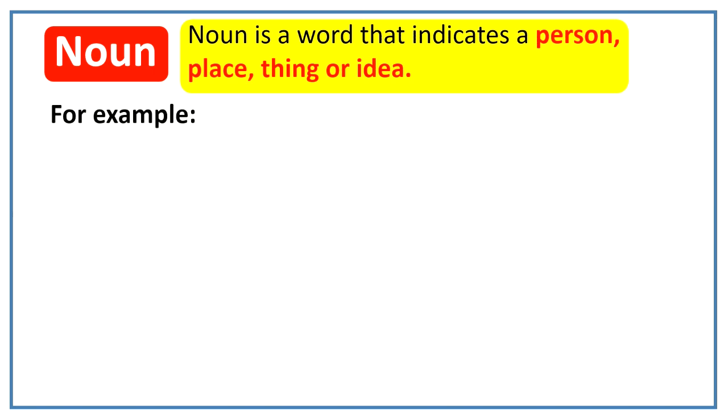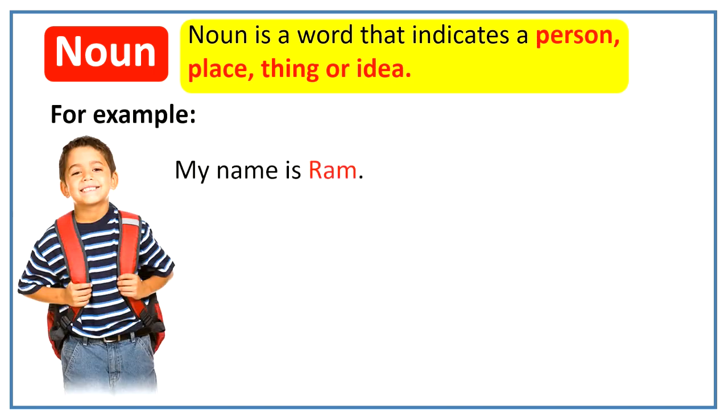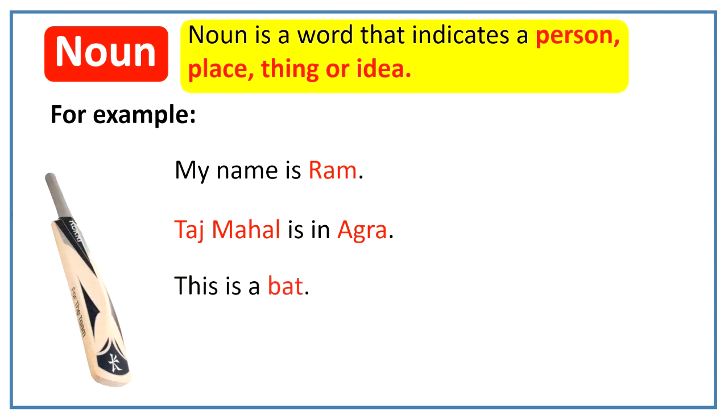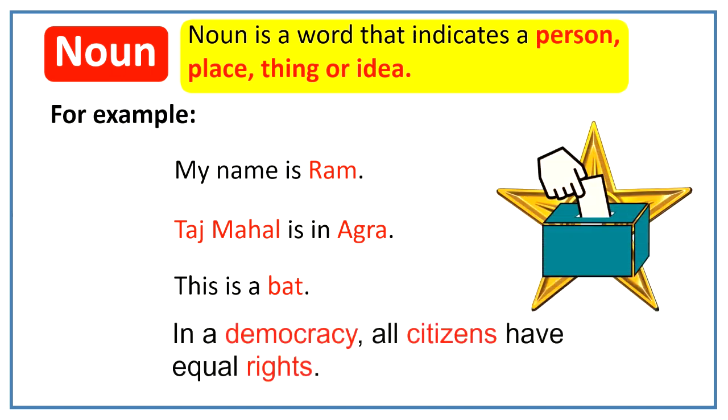For example, my name is Ram. Taj Mahal is in Agra. This is a bed. In a democracy all citizens have equal rights.